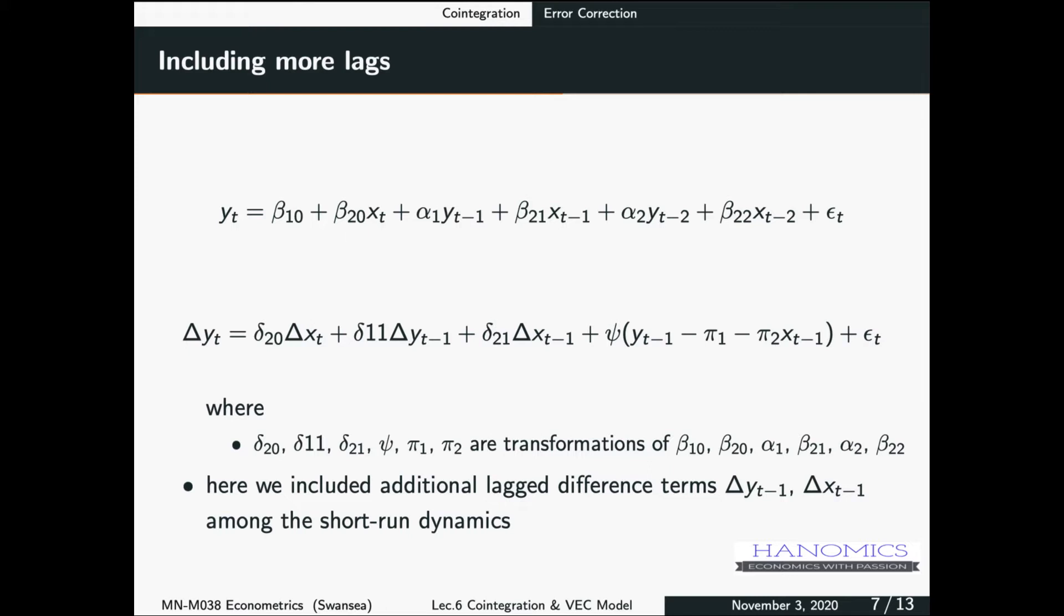That's when we call these two variables cointegrated, because they have a long-run relationship, and the error correction model explains how that works. But the question is, how can we test for that? How can we test for cointegration?